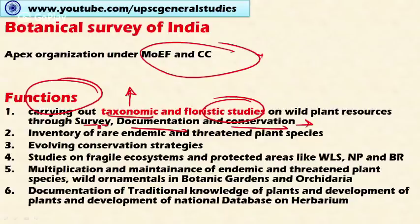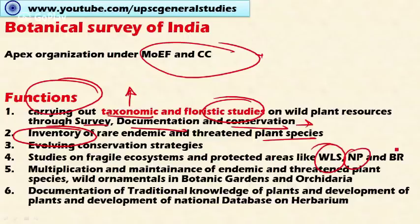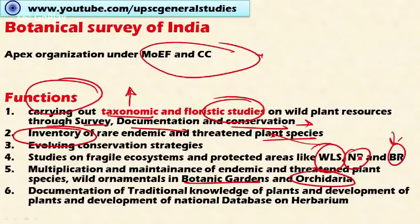The Botanical Survey of India also maintains an inventory listing rare, endemic, and threatened plant species, and involves conservation strategies for these endangered plants. It studies fragile ecosystems and protected areas like wildlife sanctuaries, national parks, and biosphere reserves, and prepares conservation strategies for the same. It also performs multiplication and maintenance of endemic and threatened species through micropropagation, vegetative propagation, and sexual propagation, including maintaining botanical gardens across the country. Additionally, it documents traditional knowledge of plants used for healing different diseases.